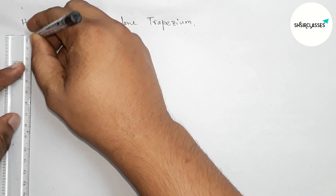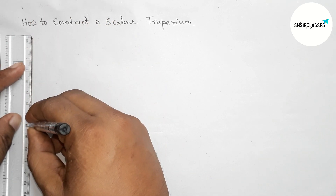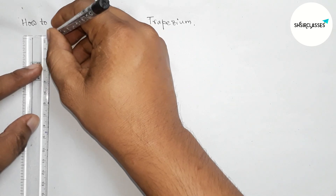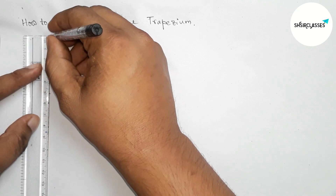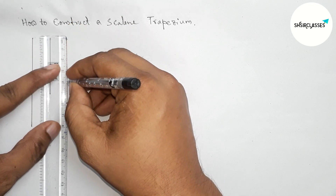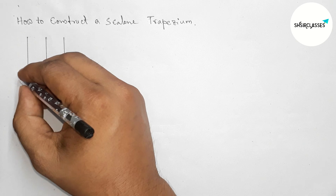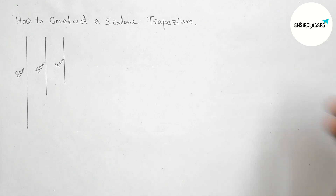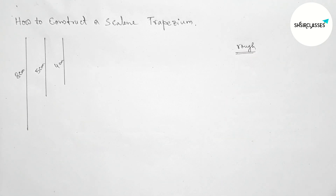First, drawing a line segment of length 8 centimeters, then drawing another line segment of length 5 centimeters, and last drawing another line segment of length 4 centimeters. So here this one is 8 centimeters, this one is 5 centimeters, and this one is 4 centimeters.